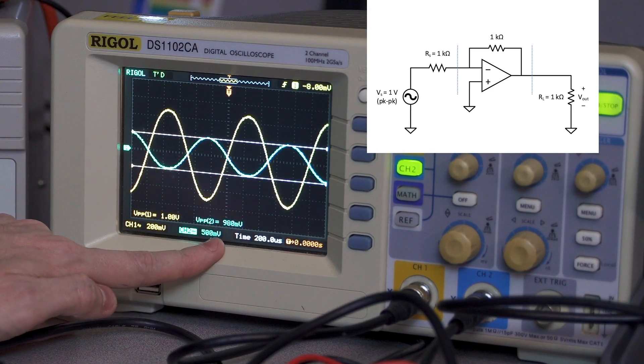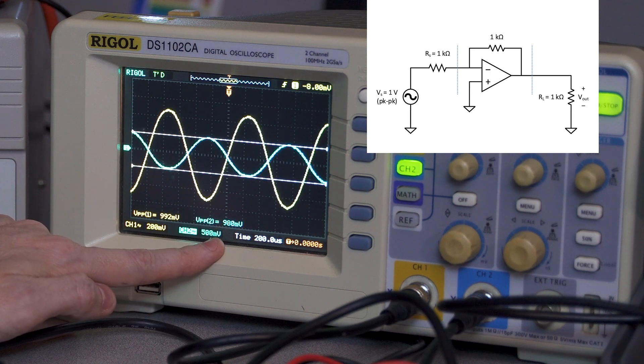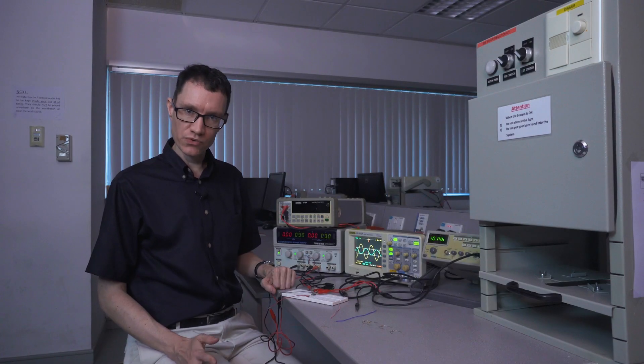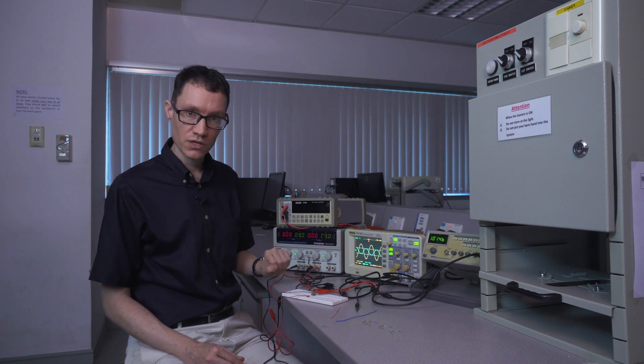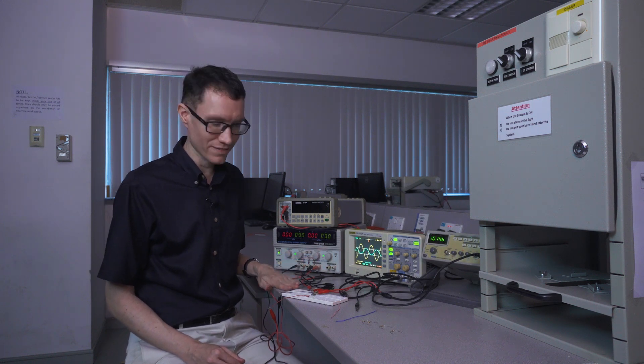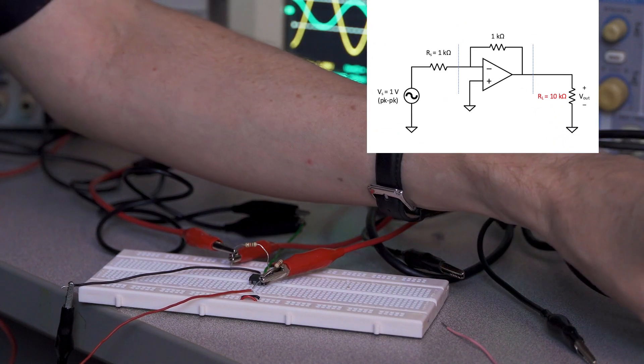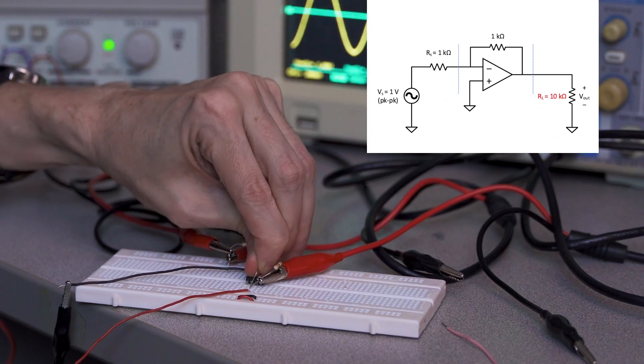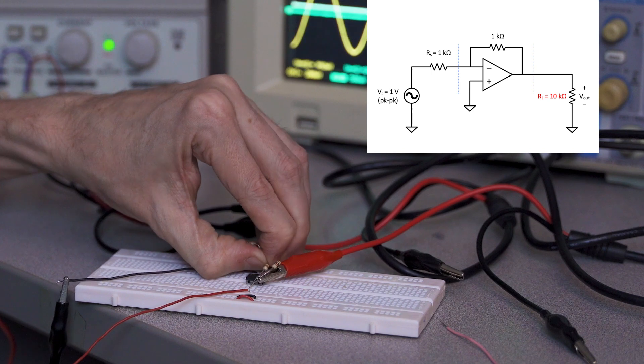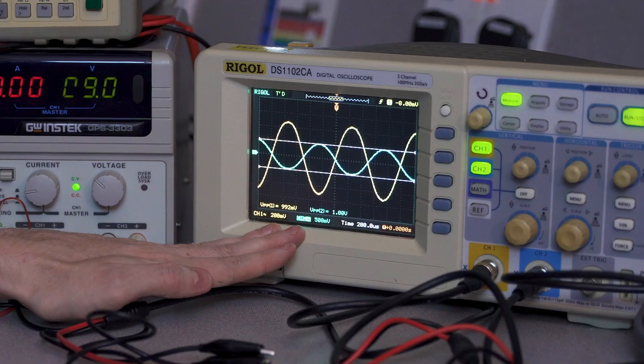and we also have 1 volt across channel 2, the output. If I change the load resistor to 10 kiloohms, we're going to notice that the gain is unaltered. Let me pull out that 1 kiloohm resistor and replace it with a 10 kiloohm resistor. We can confirm that the voltages are the same.